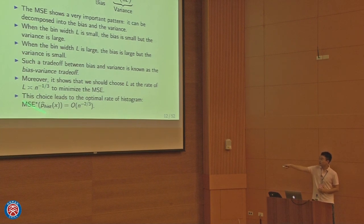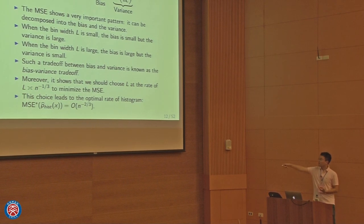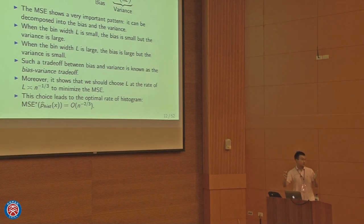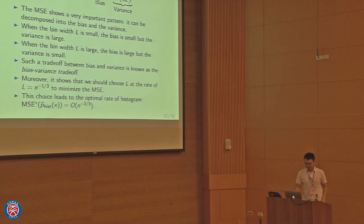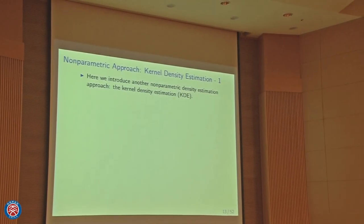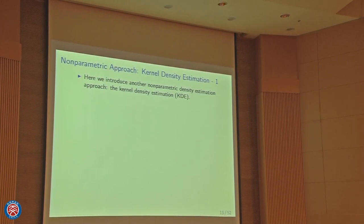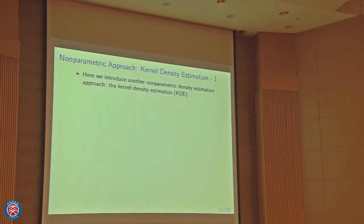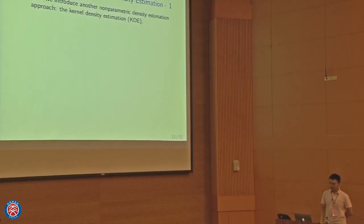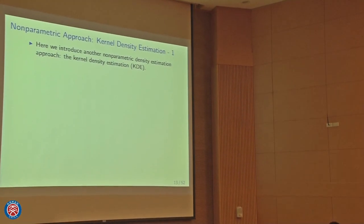This tuning parameter affects the bias-variance tradeoff. That's the histogram. Now here's another approach called the kernel density estimator, or KDE, which is actually more common in statistics and is better than the histogram in many cases. The KDE estimates density using this formula: p-hat(x) = (1/nh) * sum of K((x - xi)/h), where K is a kernel function and h is the smoothing bandwidth.